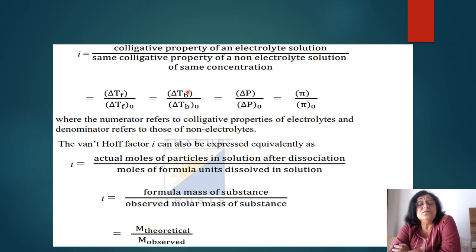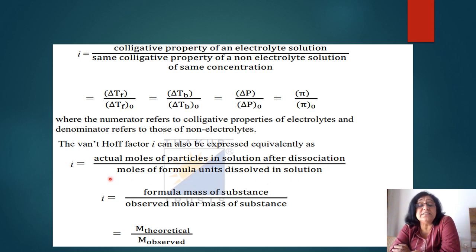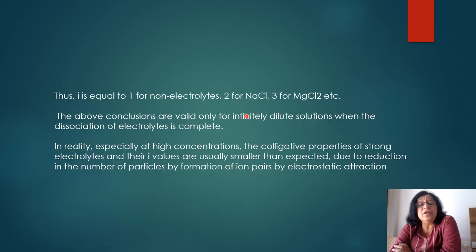For NaCl, after dissociation the moles are 2 and before dissociation the moles are 1, so i = 2. Alternatively, i = formula mass / observed molecular mass = M_theoretical / M_observed. For example if M_theoretical is 23 and M_observed is 46, i = 0.5. Thus i = 1 for non-electrolytes, 2 for NaCl, and 3 for MgCl2, depending on the ions produced on dissociation.